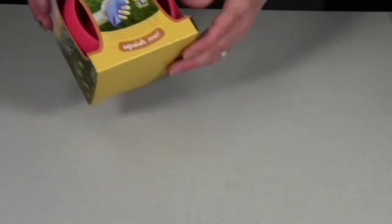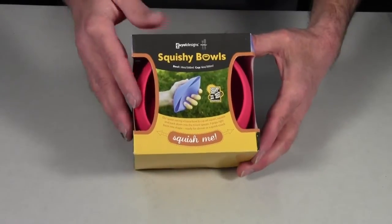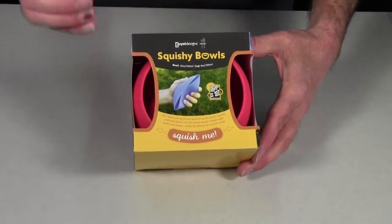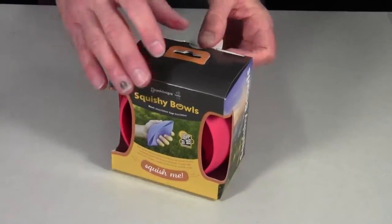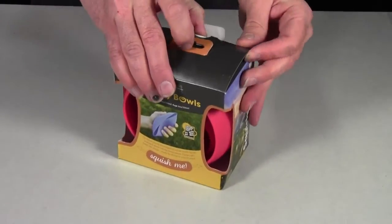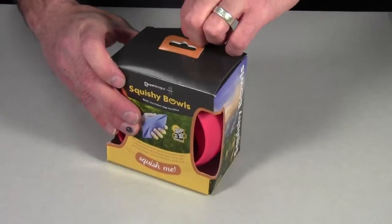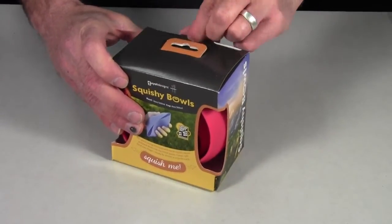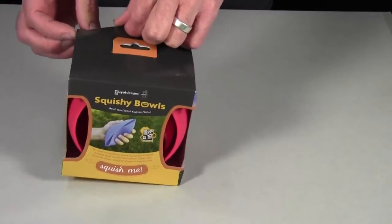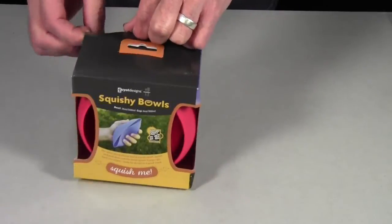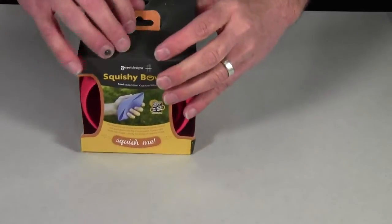Next we have the Squishy Bowl Set. And if you watch my videos, you've seen me use this quite a few times. And the reason I love this so much is because it solves one of the biggest problems I have with camp cooking, or with camp eating I should say. And that is, it feels like every time I'm eating outdoors, my food gets cold about three bites in. And this solves that problem.